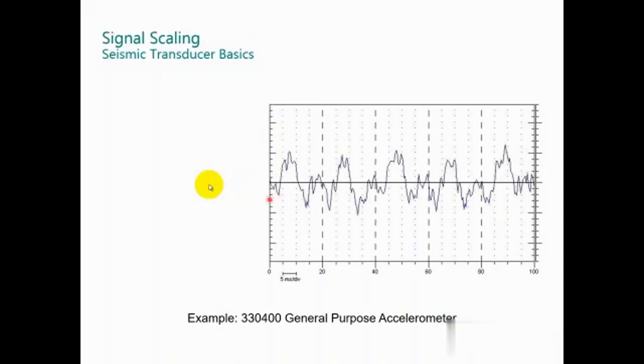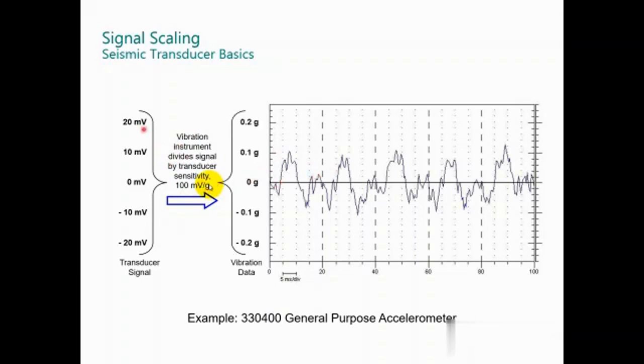From the basics, we have this signal, a complex signal from the seismometer, which corresponds to an electrical signal. The maximum in this case is 20 millivolts to minus 20. Then the software and the monitor convert this electrical signal into vibration data using the scale factor. Here, dividing by 100 millivolts per g, 20 millivolts corresponds to 0.2 g's, minus 20 millivolts corresponds to minus 0.2 g's. And now, this plot represents digitally the vibration captured by the transducer.